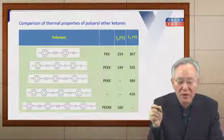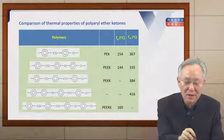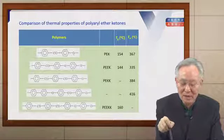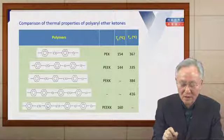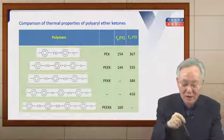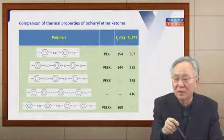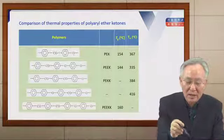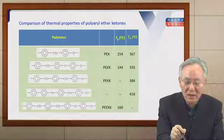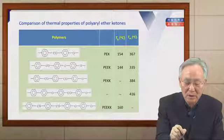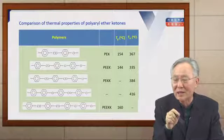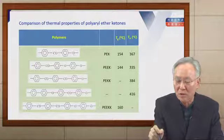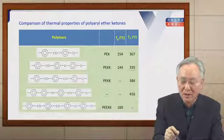A table compares the thermal properties of polyether ketones — PEK, PEEK, PEKK, and PEEKK. As ether content increases, thermal properties decrease. The polymer with 66% ether content (PEEK) has the lowest melting temperature, while the polymer with 33% ether content (PEKK) has the highest melting temperature.